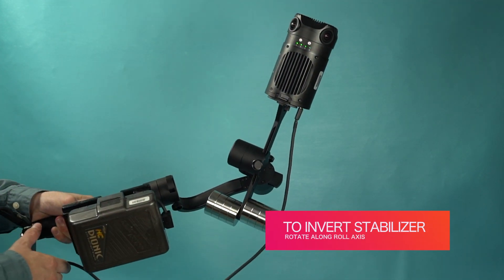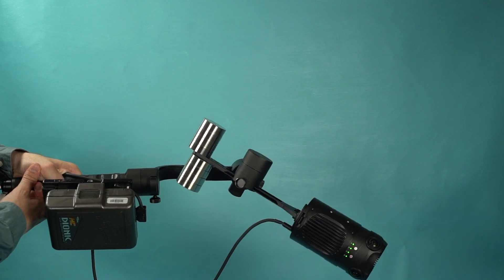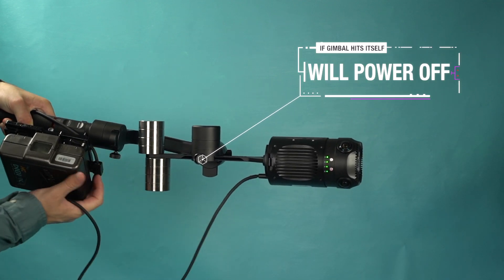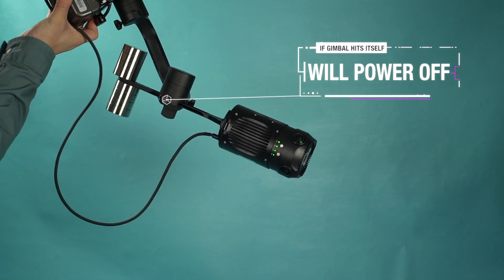To invert the stabilizer, rotate it along the roll axis. If the gimbal comes in contact with itself, the motors will eventually power off.